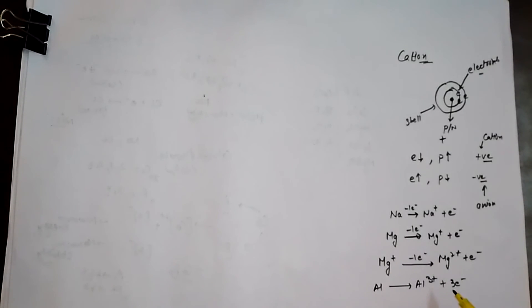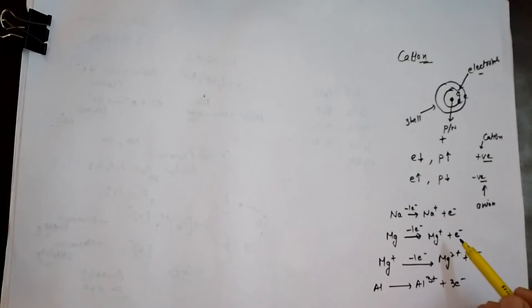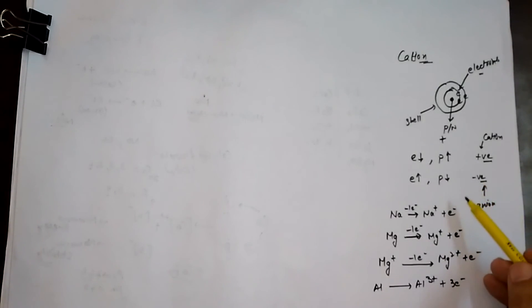However, it is usually not possible to lose more than three electrons because a very high amount of energy is required for this purpose. Another point to be noted: the electrons lost by the metal during formation will be accepted by a non-metal, which turns into the anion.